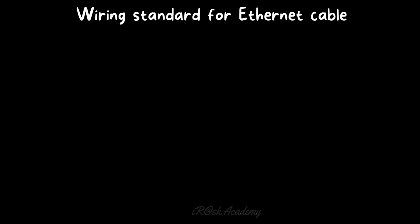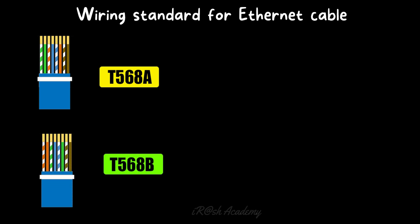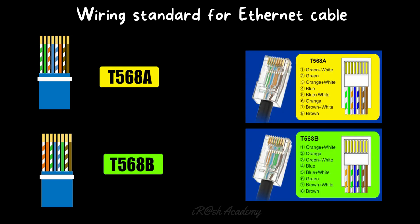Now let's discuss about the wiring standards for ethernet cables. There are two types of wiring standards: T568A and T568B. The difference between these two standards is in the color code of the wiring. T568A follows the color code: green-white, green, orange-white, blue, blue-white, orange, brown-white, brown. T568B follows the color code: orange-white, orange, green-white, blue, blue-white, green, brown-white, brown. These are the only differences in the color code. Majority of people use the B standard, T568B.